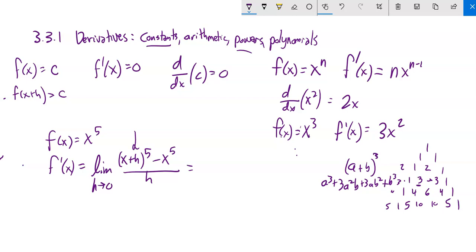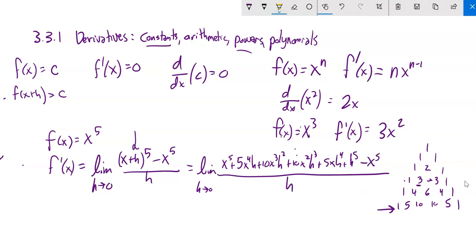So squared, cubed, fourth, fifth power. If I actually expand this out and multiply it out, it's going to be the limit as h approaches 0 of x to the 5th plus 5x to the 4th h plus 10x cubed h squared plus 10x squared h cubed minus x to the 5th.